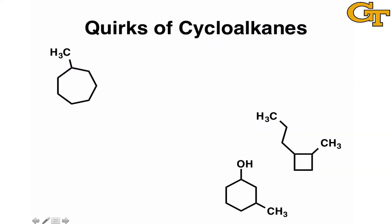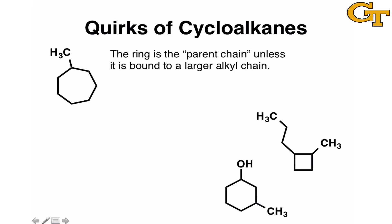So what are some of the quirks of naming cycloalkanes? First of all, the ring is always considered the parent chain unless it's bound to a larger alkyl chain, which is a quirky case. If it's bound to a larger alkyl chain — for example, say we had a five-carbon chain with a three-membered ring bound to it — then we name the ring as a cycloalkyl. So this, for example, is a cyclopropyl substituent. But more often than not, the ring will be the main focus, and you'll name the ring as the parent chain.